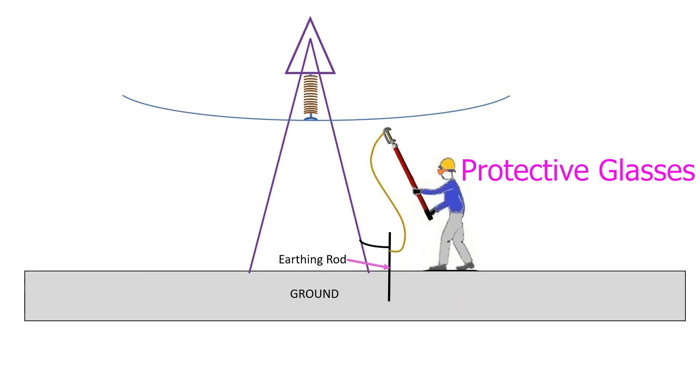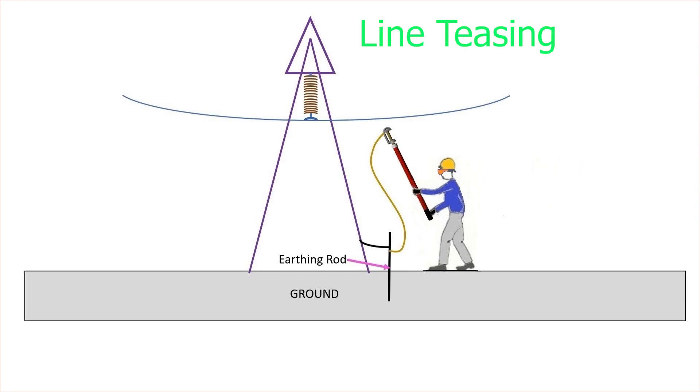Before applying PTG, line teasing must be carried out. Line teasing is basically the hearing of a buzzing sound when the ground stick's metallic head is brought near to the energized line.